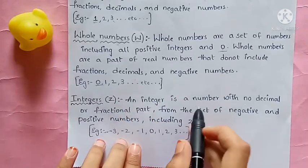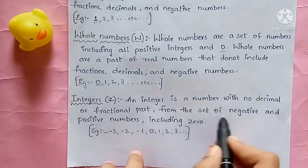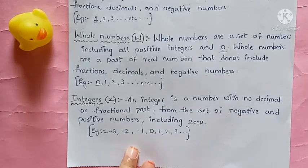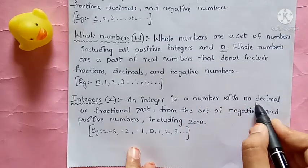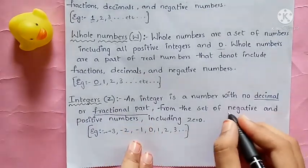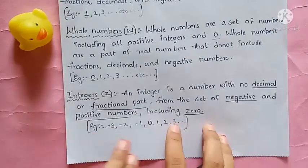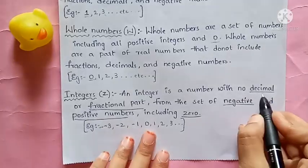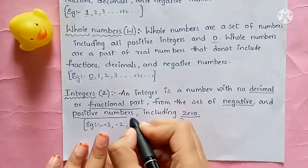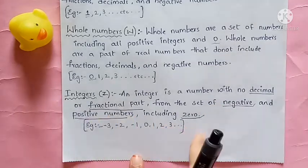An integer is a number with no decimal or fractional part, from the set of negative and positive numbers including 0. Integers do not include decimals or fractions. They are made up of negative numbers, positive numbers, and 0 combined.